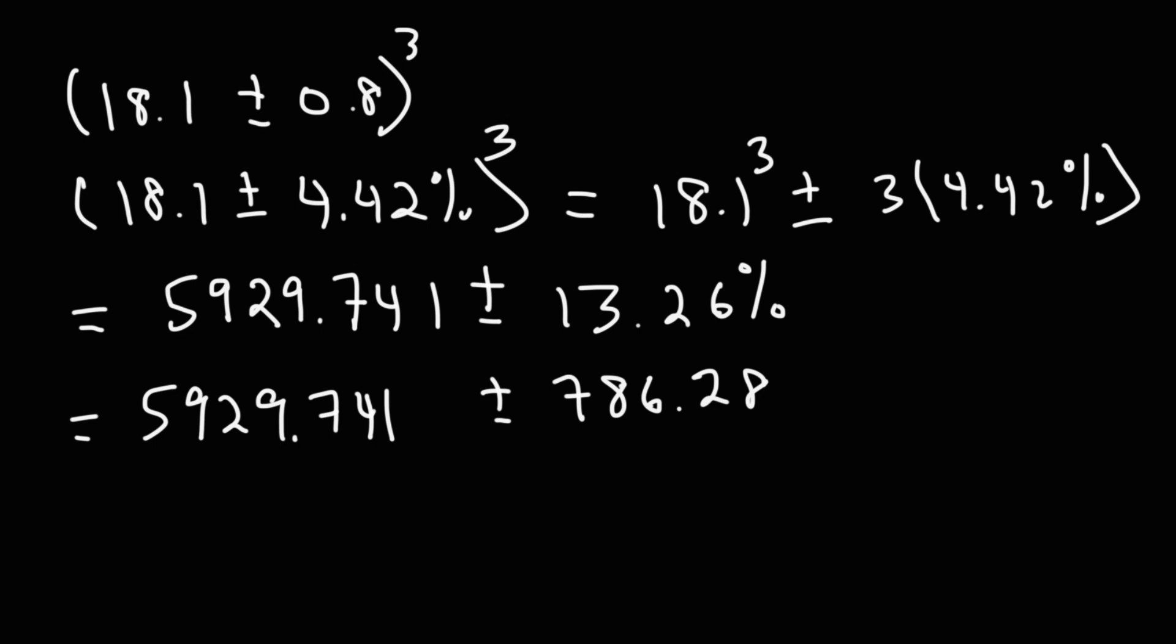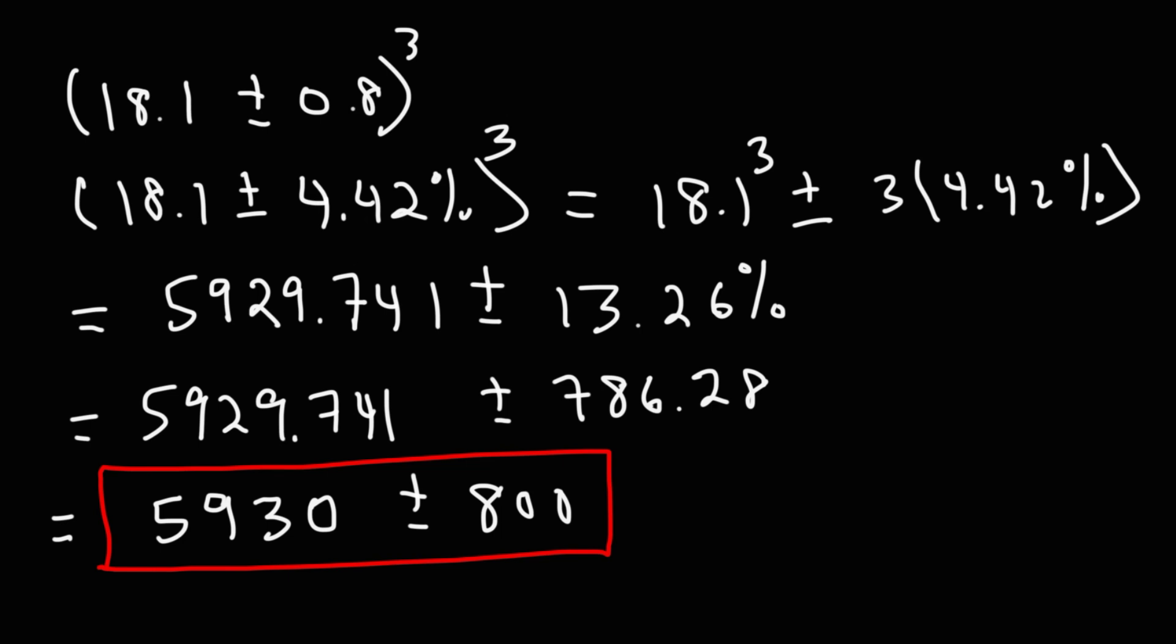Now let's do some rounding. The original measured value has three significant figures, so let's round this to three sig figs. This is going to become 5,930. Our uncertainty contains only one significant digit, so let's round this to one significant digit. We can round 786 up to 800. So this is going to be our answer: 5,930 plus or minus 800.